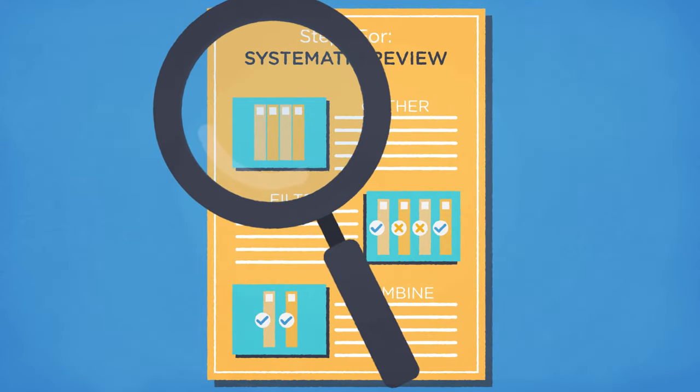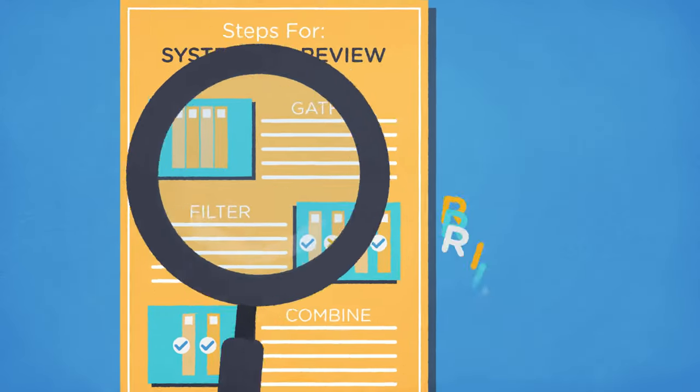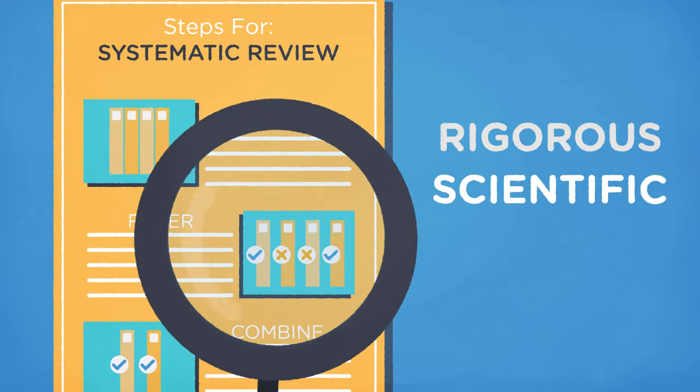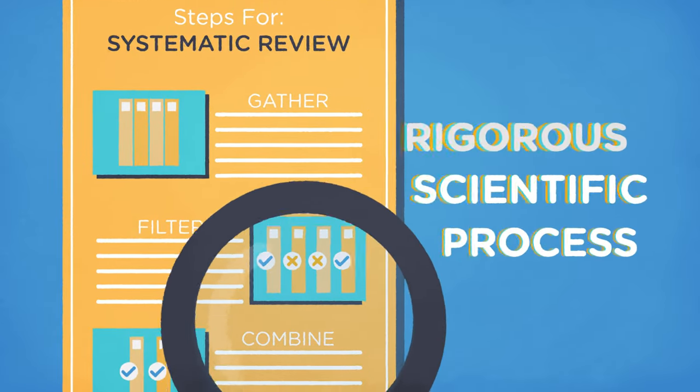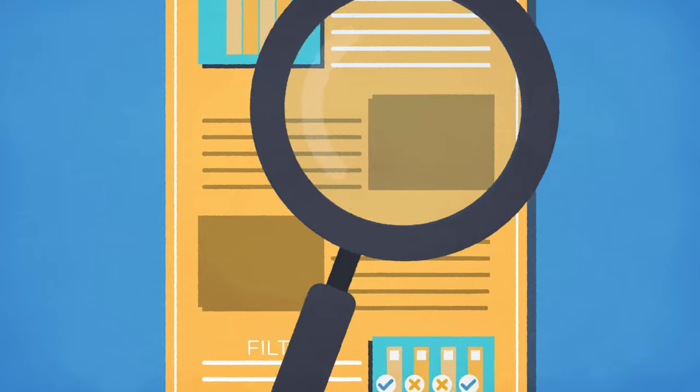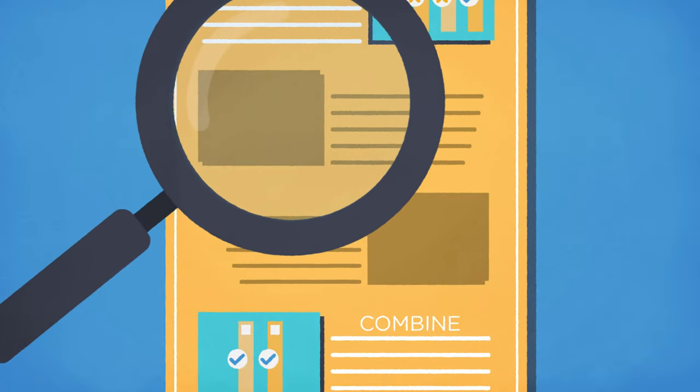But let's take a closer look. Systematic reviews follow a rigorous scientific process. It takes more than a few steps to comprehensively gather, combine, and evaluate existing evidence.